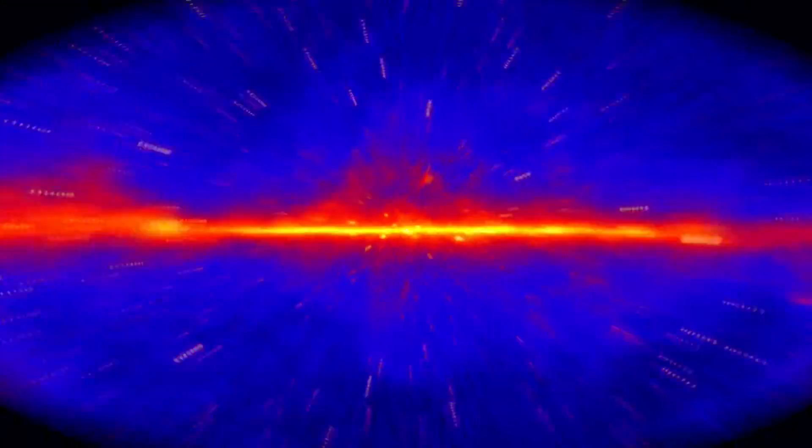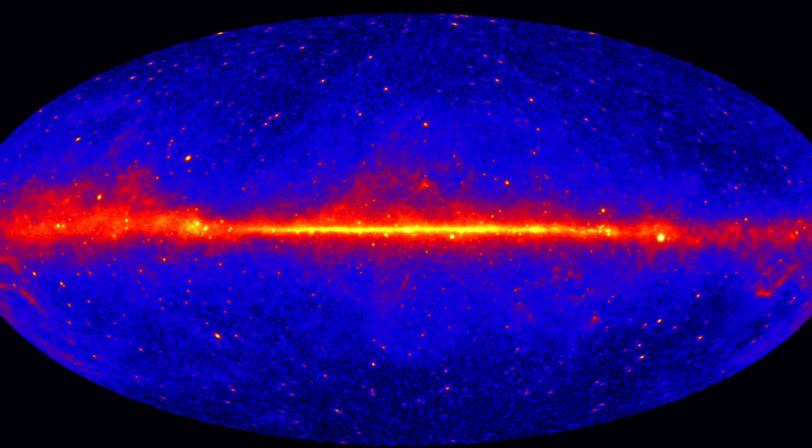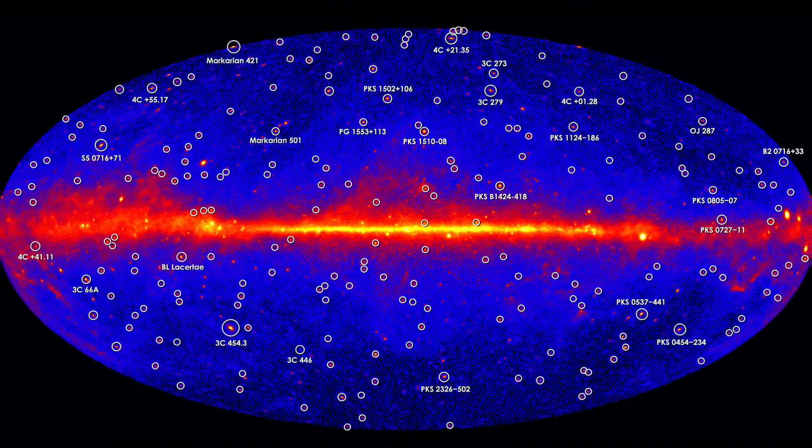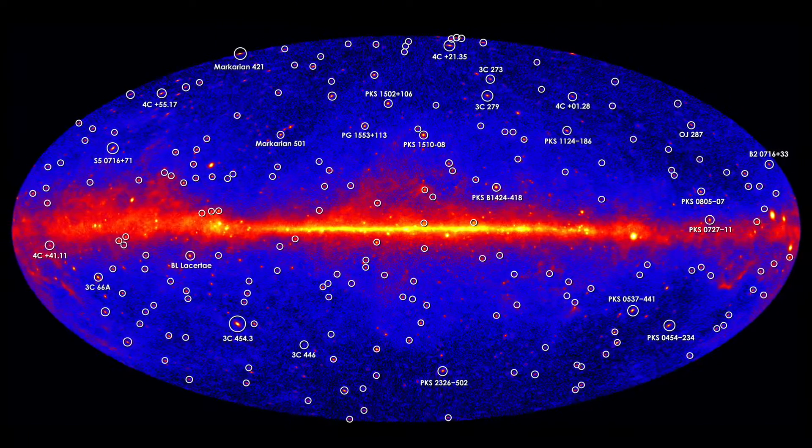Thanks to emissions powered by monster black holes, galaxies called blazars rank among the most luminous objects in the universe. They're also the most common sources of high-energy light seen by NASA's Fermi Gamma Ray Space Telescope.